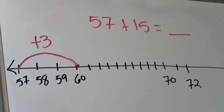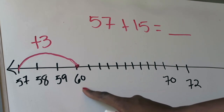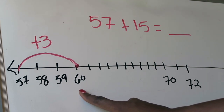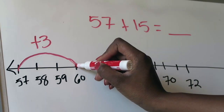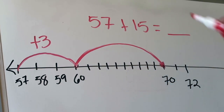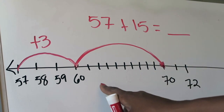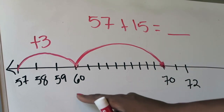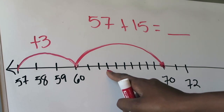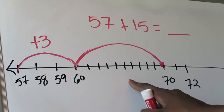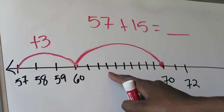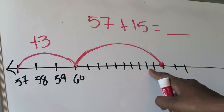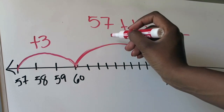Now I'm going to get to my next set of 10 from 60. What is the next number based on 10 after 60? That is going to be 70. So I'm going to jump all the way to 70. How many jumps did it take to get from 60 to 70? 61, 62, 63, 64, 65, 66, 67, 68, 69, and 70 — that was a total of 10 jumps. So I'm going to add 10 there.